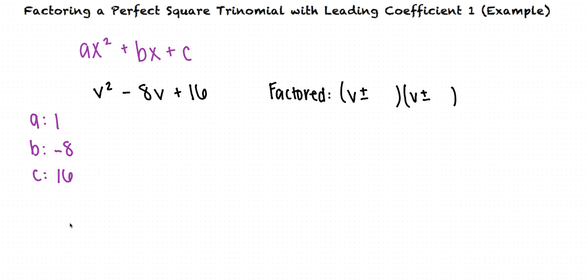We want to find what two numbers will multiply to a times c and add to b. a times c is going to be 1 times 16, which is 16. So we want to figure out two numbers that multiply to 16 and add to -8.